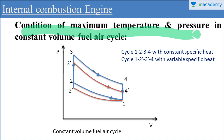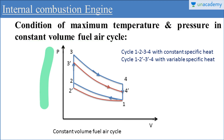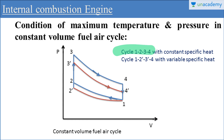So let's start our lesson with the condition of maximum temperature and pressure in the constant volume fuel air cycle. Here you can see a PV diagram. This PV diagram is representing the cycle 1, 2, 3, 4. This cycle 1, 2, 3, 4 is representing the cycle with constant specific heat, and this constant specific heat cycle is always called the air standard cycle.